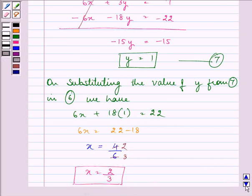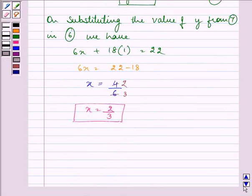Now, remember, we need to find the value of u and v, not x and y. So, we have assumed that 1 by v is equal to x and 1 by u is equal to y. So, we have 1 by v is equal to 2 by 3 and 1 by u as 1.